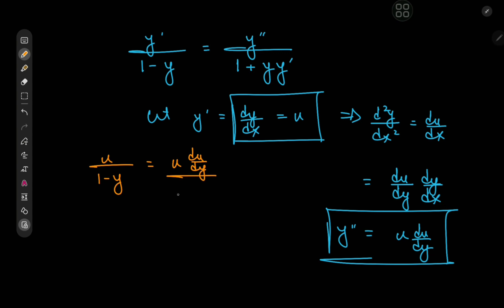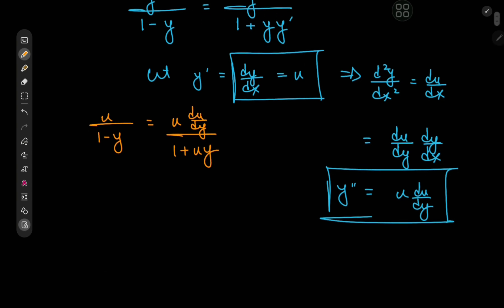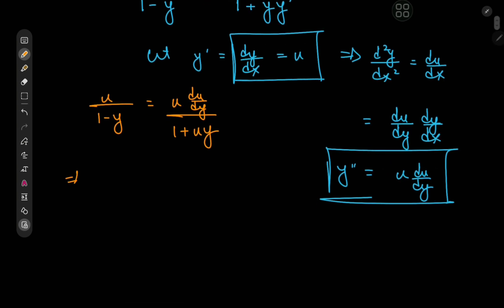Now we'll move things around so that we have u times 1 plus u times y equal to u times 1 minus y times du by dy. We'll then divide by u, which means we lose the solution of u equal to 0.